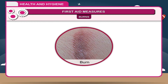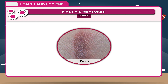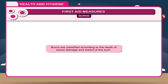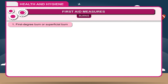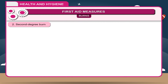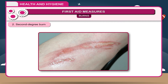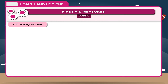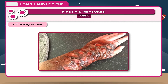Burns. A burn is an injury to the skin caused by exposure to fire, hot liquids or metals, etc. Burns are classified according to the depth of tissue damage and extent of the burn. 1. First degree burn or superficial burn involves only the surface of the skin and is characterized by reddening. 2. Second degree burn extends beneath the surface of the skin and causes blistering and severe pain. 3. Third degree burn causes charring and destruction of the cell-producing layer of skin.